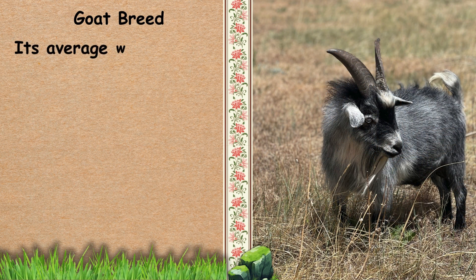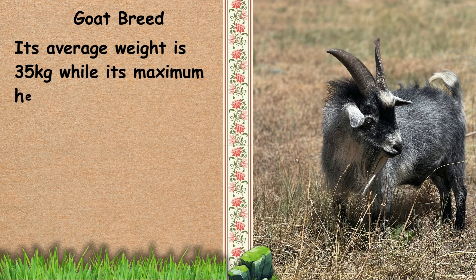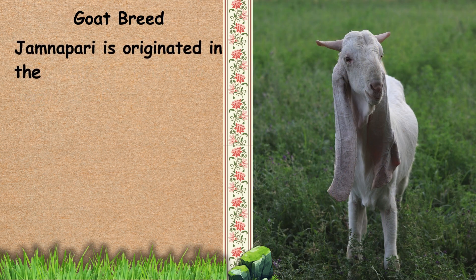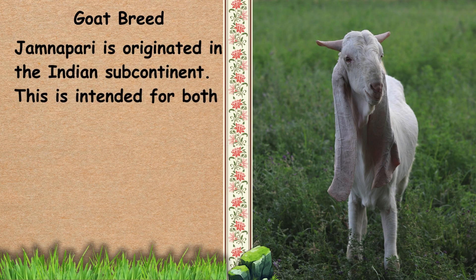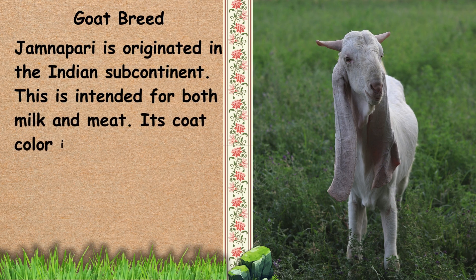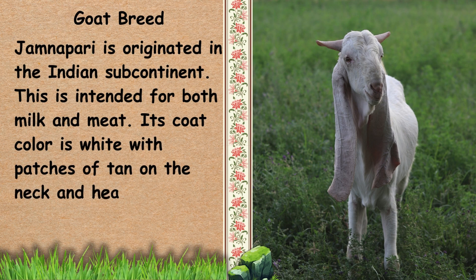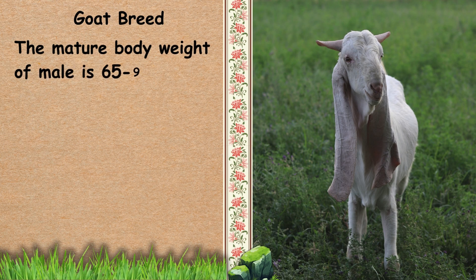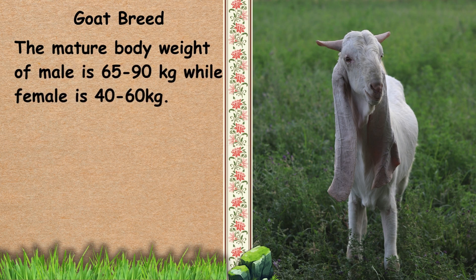Its average weight is 35 kg while its maximum height is 60 cm. Next, we have Jamnapari. Jamnapari originated in the Indian subcontinent and is intended for both milk and meat. Its coat color is white with patches of tan on the neck and head. The mature body weight of male is 65 to 90 kg while female is 40 to 60 kg.